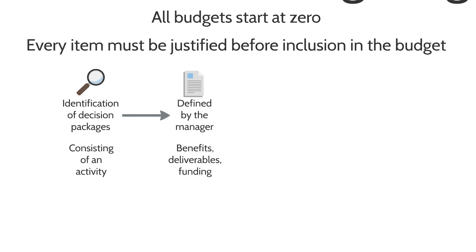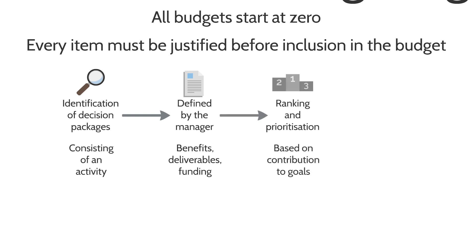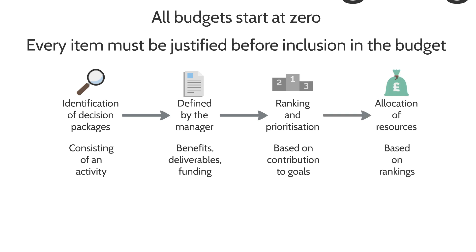A committee reviews each decision package alongside others that have been presented, and ranks and prioritises them. For example, if one activity has a far higher contribution than another, it's ranked ahead because it provides more contribution to the organisation. Or if one is more in line with the goals and objectives of the company, it's prioritised accordingly. Once all decision packages have been ranked, resources can be allocated fairly based on those rankings.